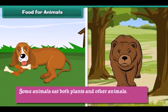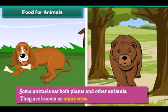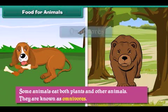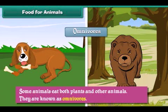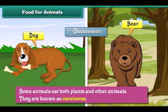Some animals eat both plants and other animals — they are known as omnivores. Examples of omnivores are bears, dogs, etc.